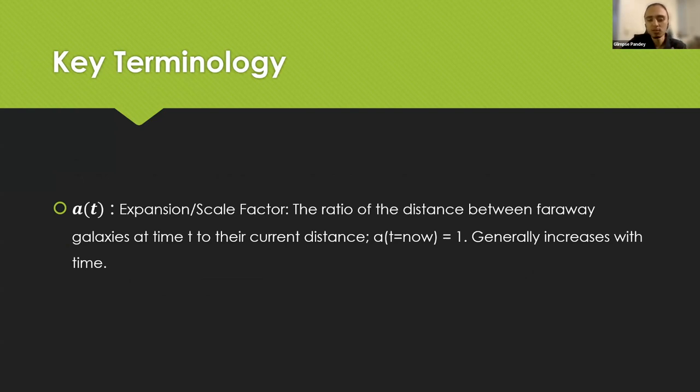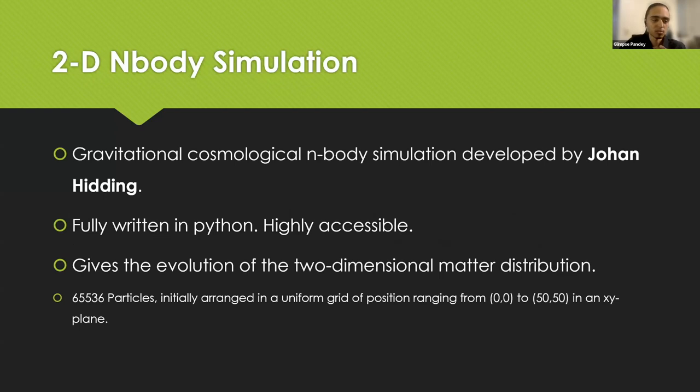Introducing the tool that we've been mostly using throughout this project: it's a 2D cosmological gravitational n-body simulation developed by Yoon Hitung. It is written in Python and it's a very accessible code, easy to understand, and it gives the evolution of a two-dimensional matter distribution. The number of particles is 256 squared.